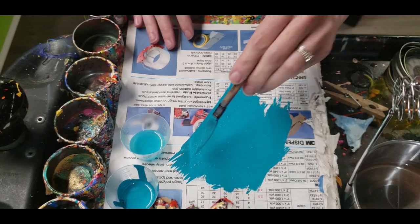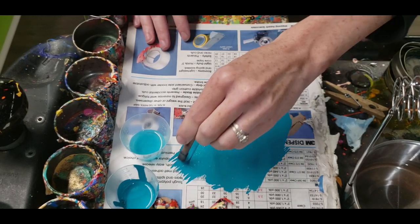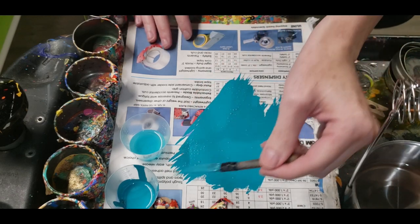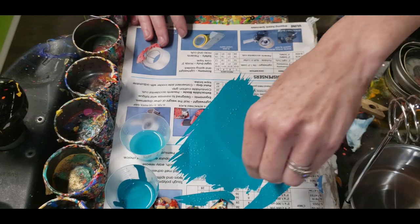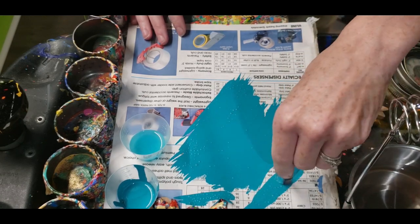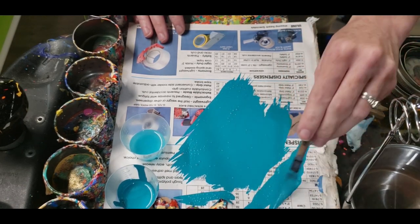When you have way too much thinner, the paint consistency gets really see-through. And also, you can get some bad adhesion with that. So if I wanted to work some of that reducer out of my brush, I'll go to a new area.